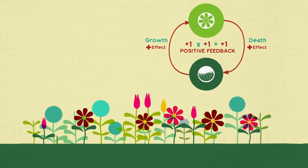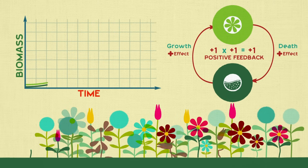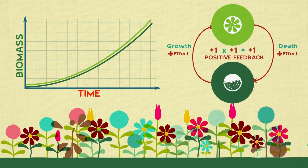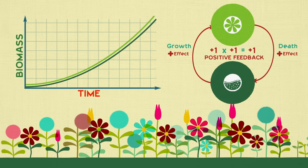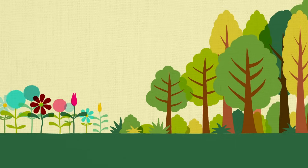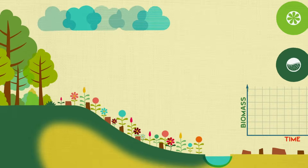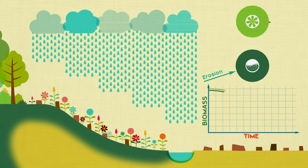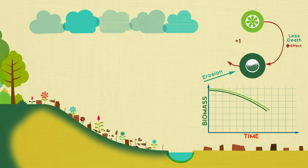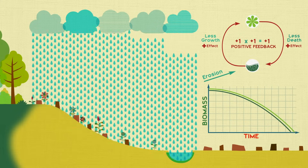But it's not called positive feedback because it's beneficial. Rather, it is positive because it amplifies a particular effect or change from previous conditions. These positive or amplifying loops can also be harmful, like when removing a forest makes it vulnerable to erosion, which removes organic matter and nutrients from the earth, leaving less plants to anchor the soil and leading to more erosion.